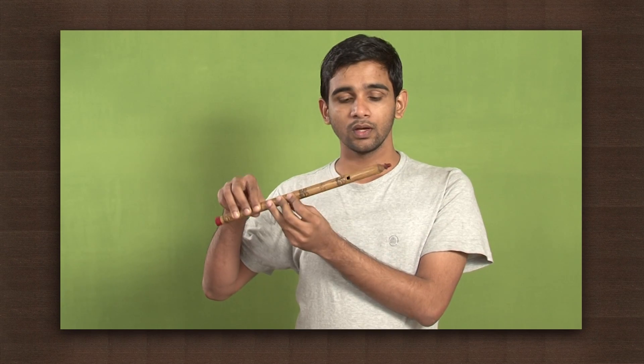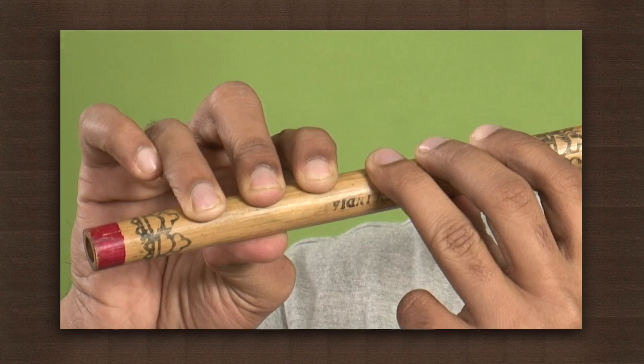Take a flute, close all the holes with your fingers and blow it. Remove your fingers from the holes one by one each time and blow the flute.